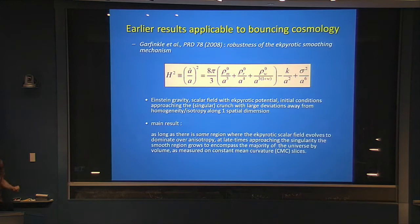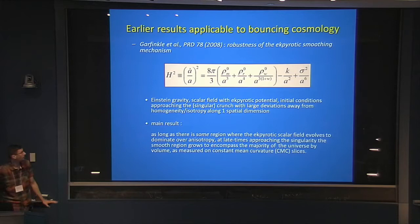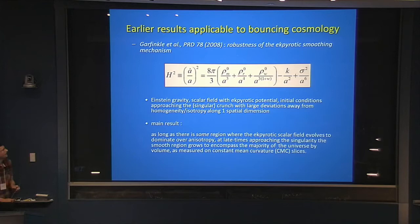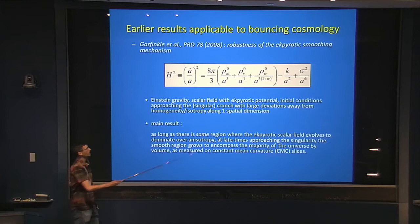The next example was to understand the robustness of the ekpyrotic smoothing mechanism. Paul spent a lot of time yesterday emphasizing how important that aspect of cosmology is in the contracting phase. I think today it's essentially a solved problem — we know the ekpyrotic mechanism acts as a strong smoother. It was well-known perturbatively, and one of the pieces of data supporting this is also some of this nonlinear analysis we did. This is the Friedmann equation that Paul had yesterday, but I've explicitly added the term describing anisotropy.